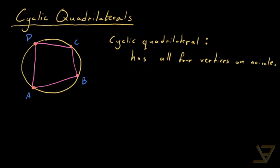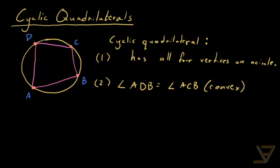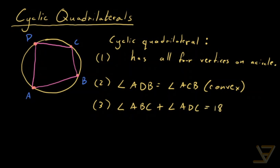We're going to discuss two other equivalent formulations of cyclic quadrilaterals. The first is the definition above. The second is that angle ADB is equal to angle ACB in a convex quadrilateral — we're assuming convexity. The third criterion is that angle ABC plus angle ADC is equal to 180 degrees, and once again we're assuming convexity.